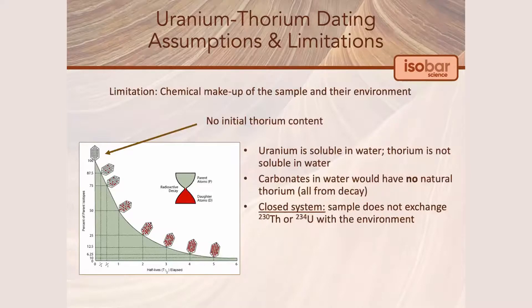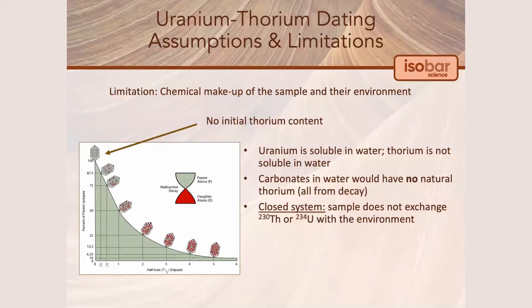The uranium-thorium dating method can only be applied to objects which initially have no thorium content. Uranium is soluble in water, whereas thorium is insoluble in water. Therefore, rocks and organic material that develop in the presence of water would have no natural thorium content, and thus all thorium within the sample would be a result of uranium decay.